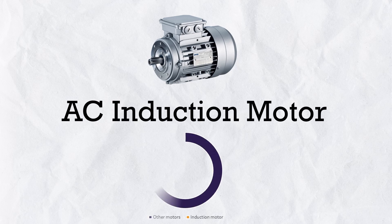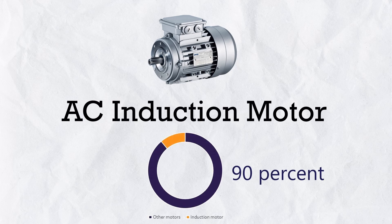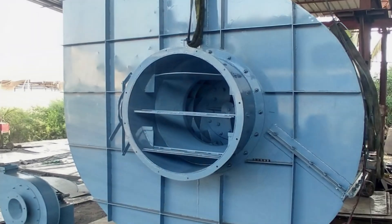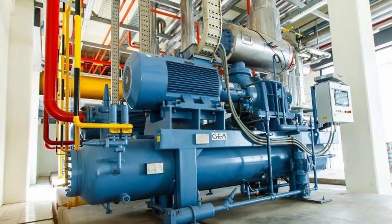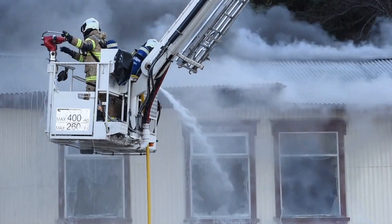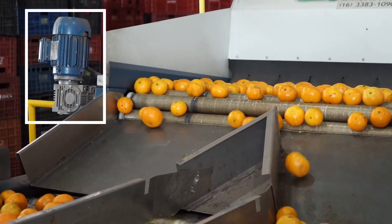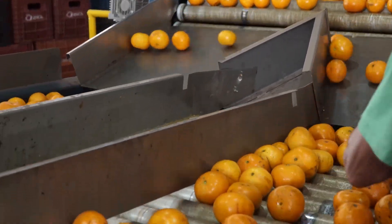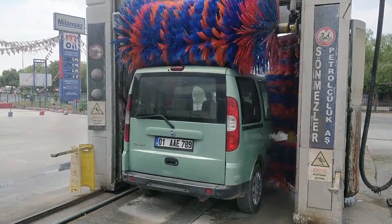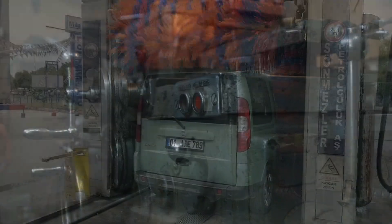Now back to the AC induction motor. This is one of the most popular motors — 90% of industrial motors are induction motors. We can use this motor in almost all general applications like conveyors, blowers, compressors, hydraulic pumps, water pumps, and industrial fans. It is ideal where we just need motion at a particular speed, with no specific control required — just start and stop.